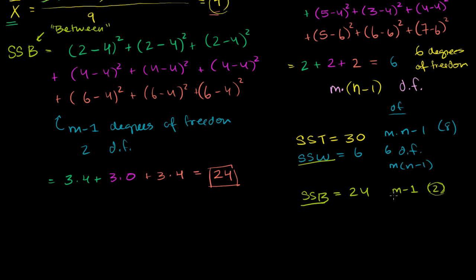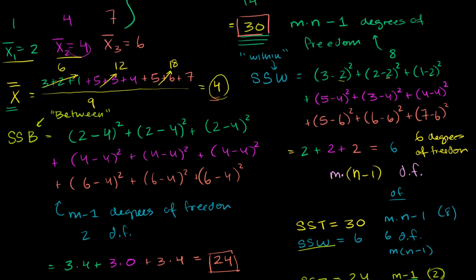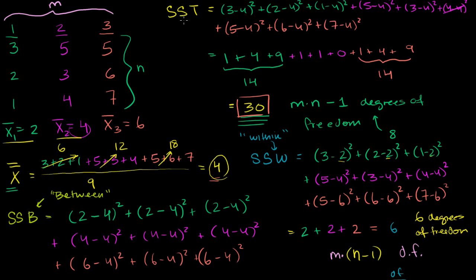This even works in the general case. Sum of squares between had m minus 1 degrees of freedom. Sum of squares within had m times (n minus 1) degrees of freedom. Adding them: (m minus 1) plus (mn minus m) equals mn minus 1, which is exactly the total degrees of freedom for the total sum of squares. So the whole point is to appreciate that total variation can be viewed as the sum of two components: variation within each sample plus variation between the means of the samples.